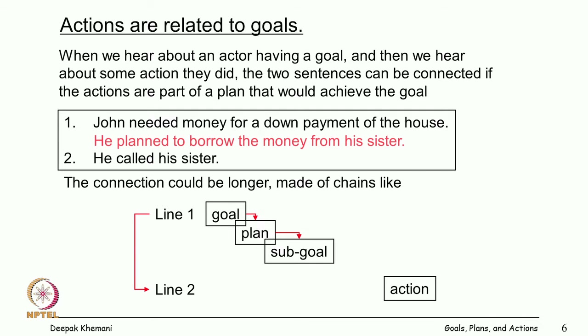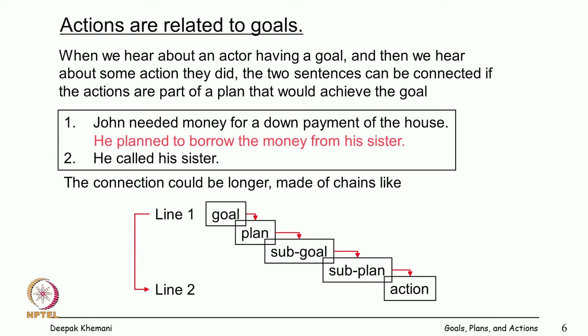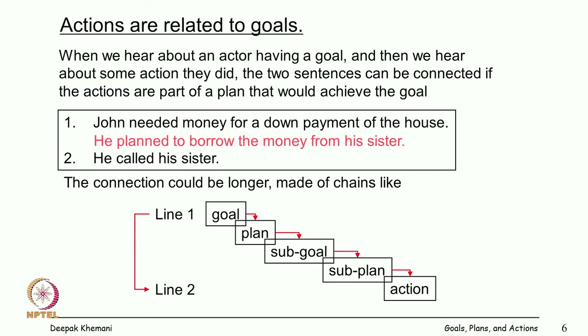There is a chain: if you have a goal you may have a plan, for which you may have a sub-goal, for which you may have a sub-plan, of which an action may be a part. If you know a person has a goal and you hear about an action — John needed money and called his sister — you want to find the chain of reasoning connecting the first sentence to the second. PAM is a program which tries to uncover these kinds of relations.